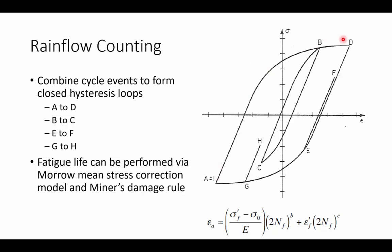And of course, with these hysteresis loops, we can then go and use Morrow's mean stress correction model for strain life and also Miner's damage rule to predict the cycles to failure for this very variable amplitude data. So the rain flow method is very popular because of this capability of getting these loops.